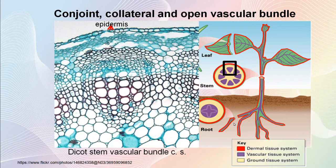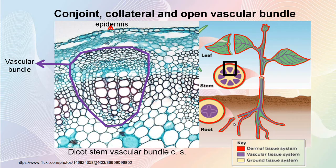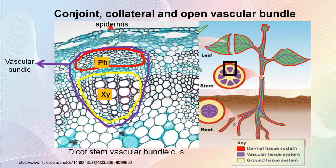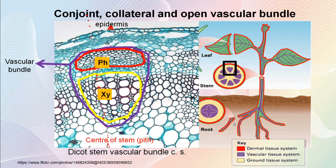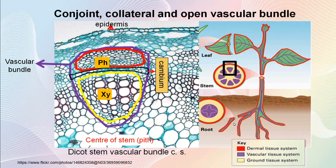Here in this part of the cross section of a dicot stem, you can see a conjoint, collateral and open vascular bundle. It is conjoint because xylem and phloem groups are seen together on the same radius. It is collateral because xylem is seen towards the centre of the stem. It is open because there is a thin layer of cambium in between xylem and phloem.